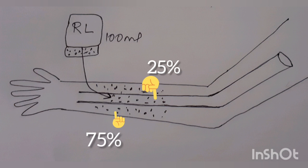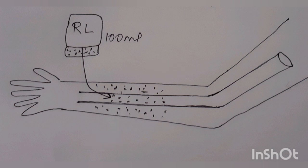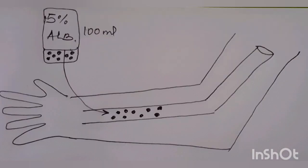Colloidal solutions like albumin and HES, on the other hand, have large solute molecules that do not pass readily from plasma to the interstitium. The retained molecules in a colloid fluid create an osmotic force called the colloid osmotic pressure that holds water in the vascular compartment.